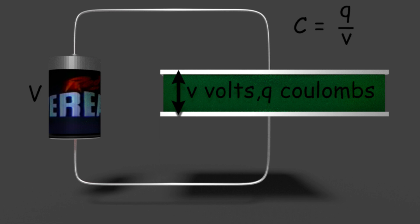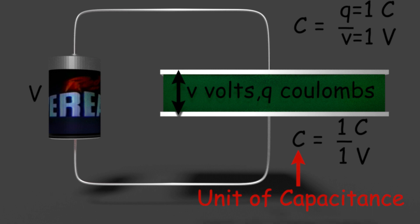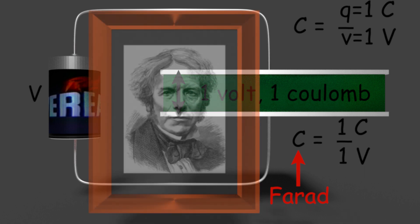Now we will put Q equals 1 coulomb and V equals 1 volt, and we will get C equals 1 coulomb by 1 volt. This 1 coulomb per 1 volt is the unit of capacitance. So one unit of capacitance is defined as the capacitance of a capacitor which causes 1 volt potential difference across the capacitor when 1 coulomb of charge is stored in it. This unit of capacitance is named as Farad, after the name of Michael Faraday.